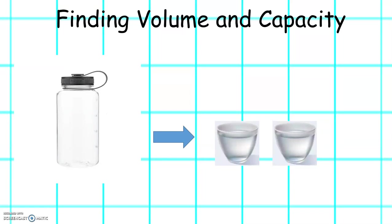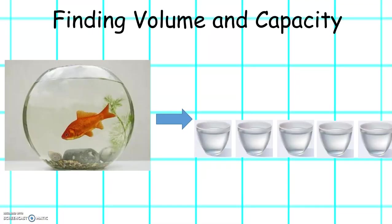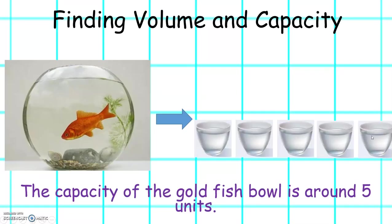What is the capacity of the water bottle? The capacity of the water bottle is around two units. The capacity of the goldfish bowl is around five units.